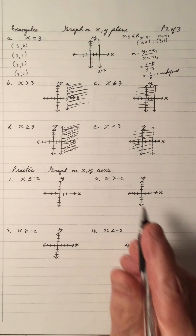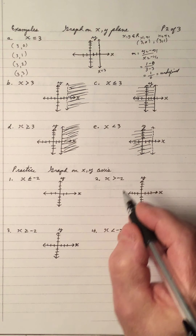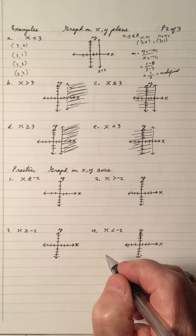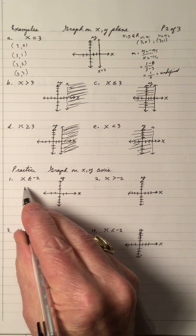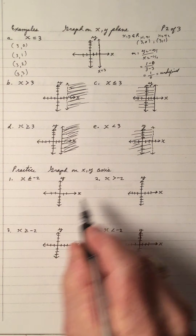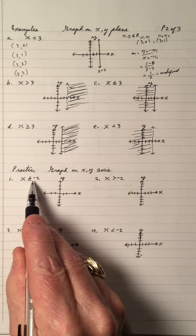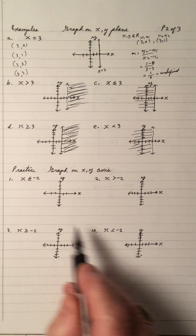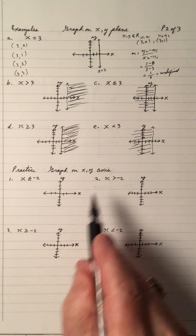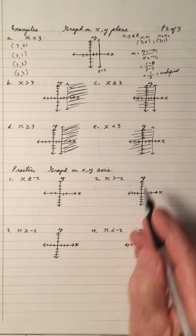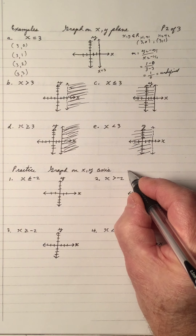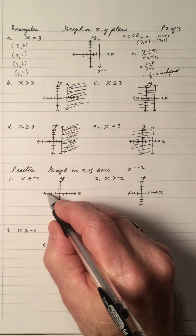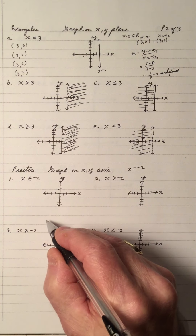Practice: graph on the xy axis, where x and y belong to the real numbers. The boundary line for all of these is x equals negative 2 — I'm changing just the inequality sign: less than, equal to, greater than, greater than or equal to, less than or equal to. So where is x equals negative 2? Right here — x is 0, 1, 2, negative 1, negative 2. x equals a number is a vertical line.